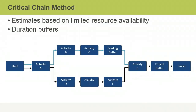The critical chain method is related to the critical path method. It can be used when there is limited resource availability or uncertainty of activity duration estimates. You enter buffers to the network diagram to account for the uncertainty. Each buffer is a reserve period in which work on any activities that are running late can be completed. Feeding buffers can be used to create a reserve on any path, while a project buffer can be used on the critical path to protect the entire project schedule from delays.